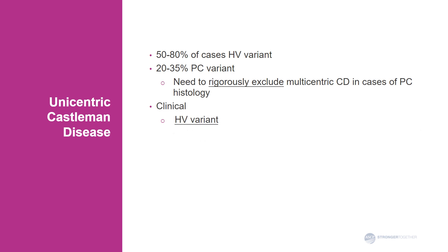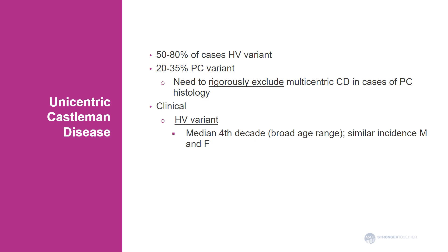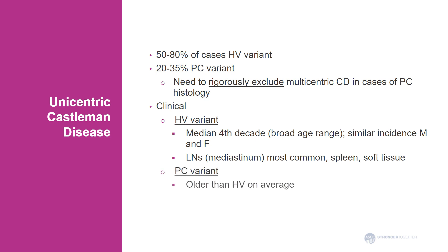Hyaline vascular variant occurs over a broad age range, from childhood to old age, but is most commonly seen in people in their fourth decade. It has similar incidence among males and females, and lymph nodes are most commonly involved, with the typical site being the mediastinum. However, occasionally we see involvement of the spleen or soft tissue. Plasma cell variant patients are on average older, and any lymph node group can be involved, also with similar incidence in males and females.